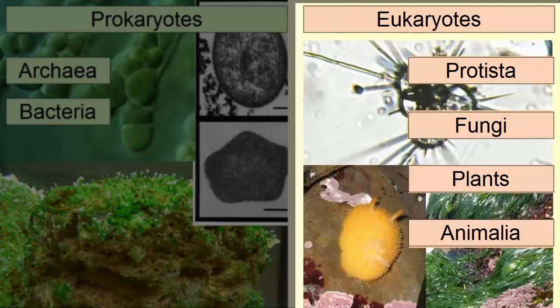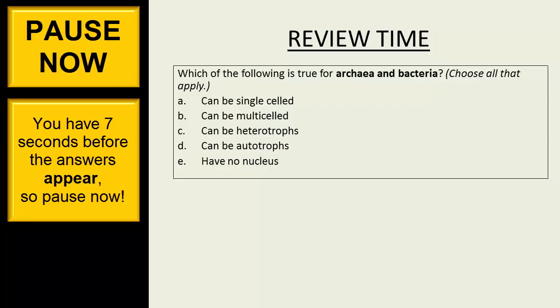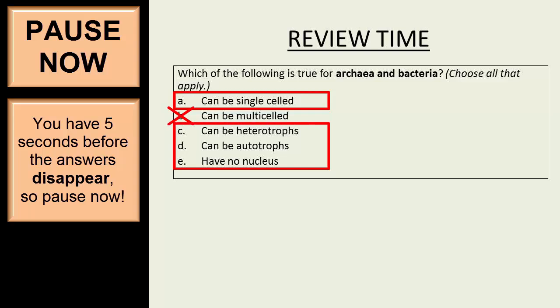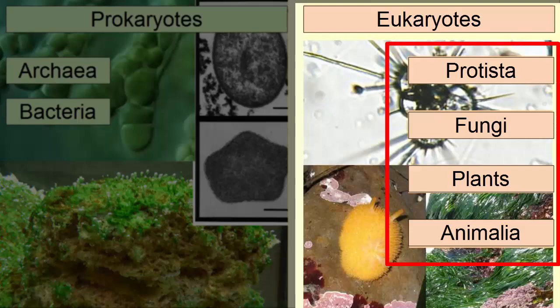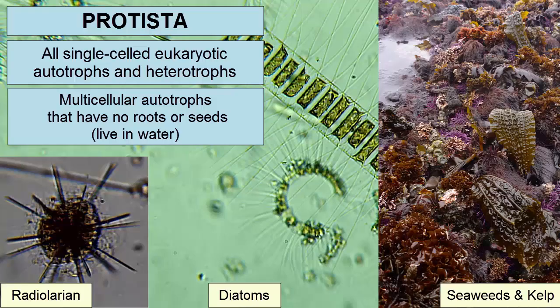Eukaryotic organisms evolved about one to two billion years ago. They have a nucleus and can sexually reproduce. There are four kingdoms of eukaryotes. The Protista kingdom consists of eukaryotic single-celled, colonial, and multicellular autotrophs and single-celled heterotrophs.